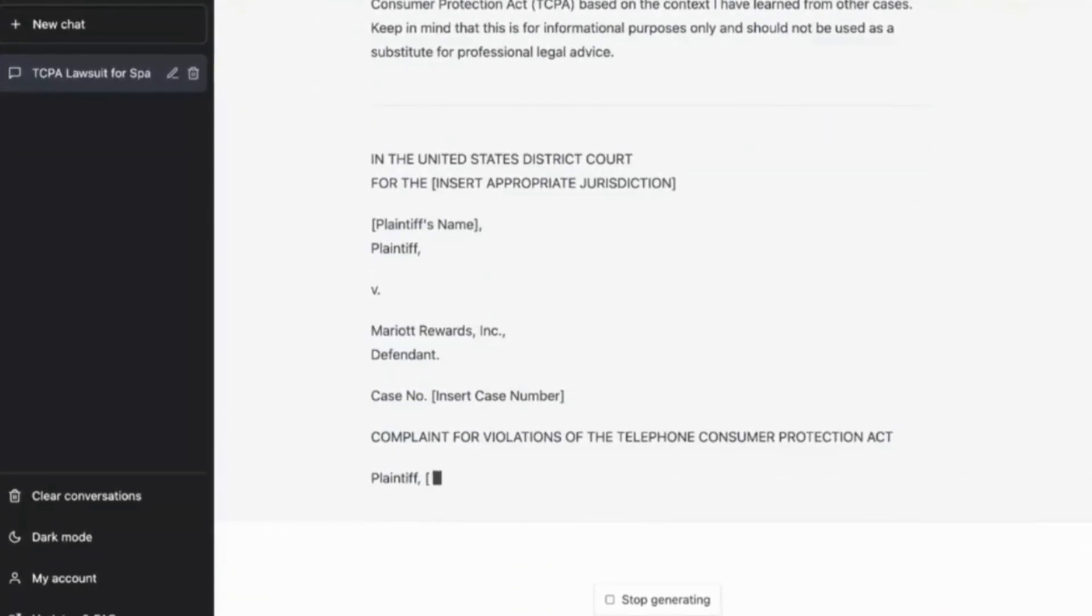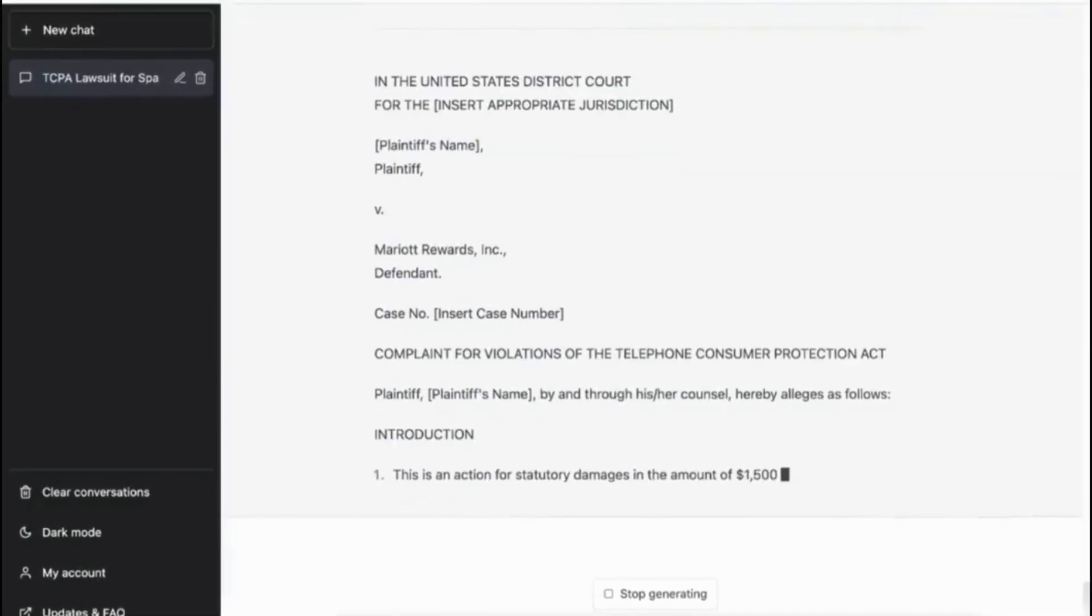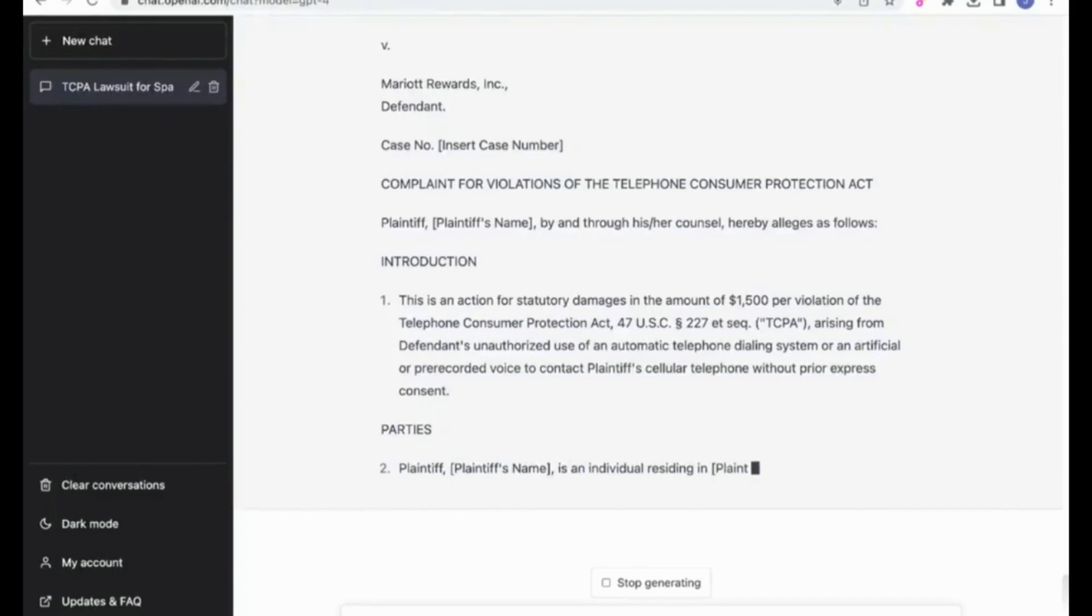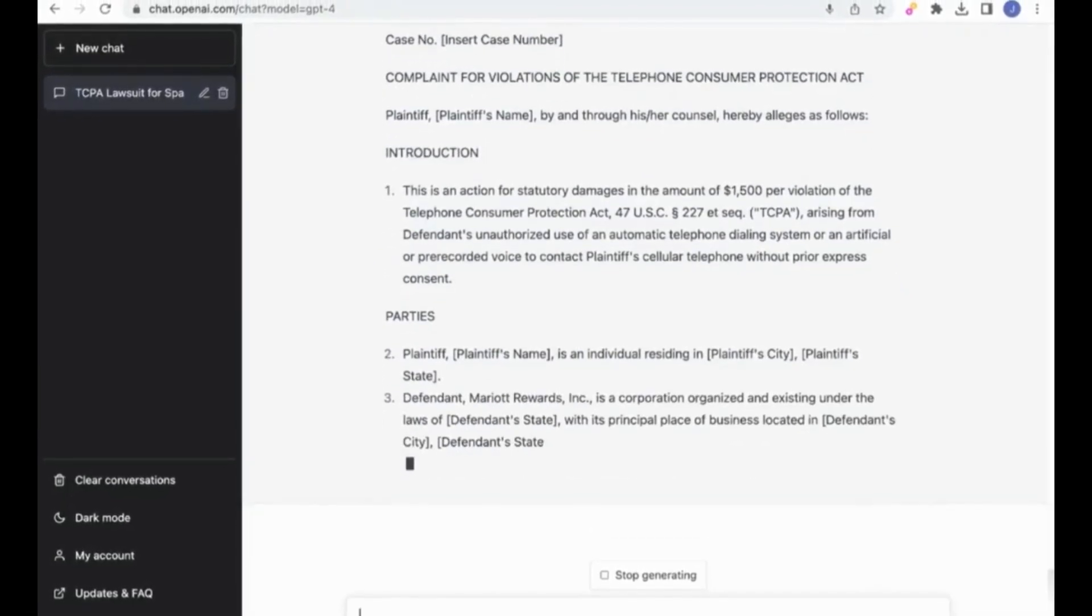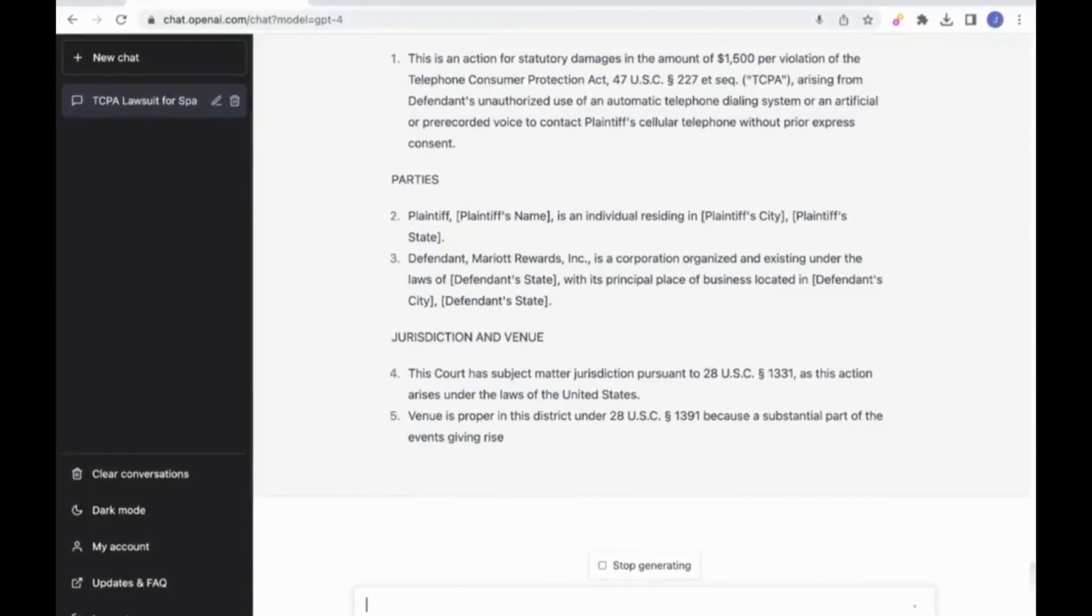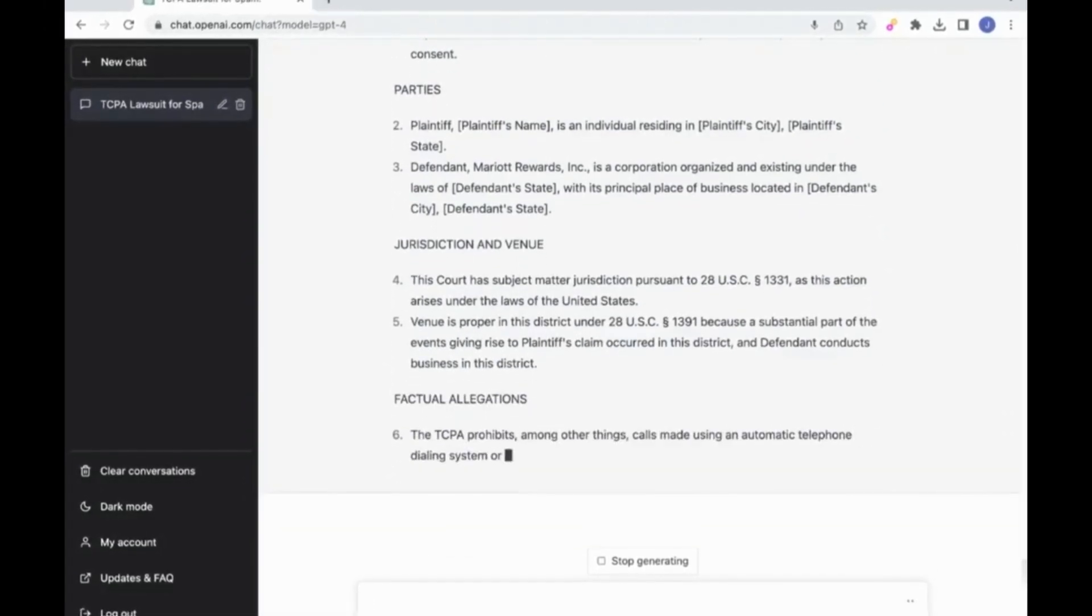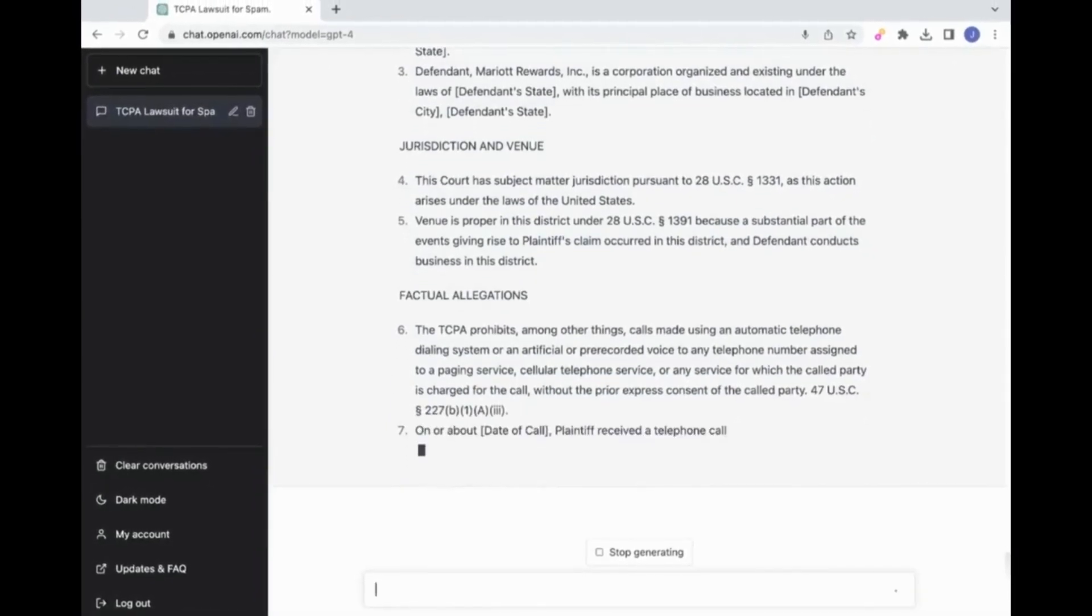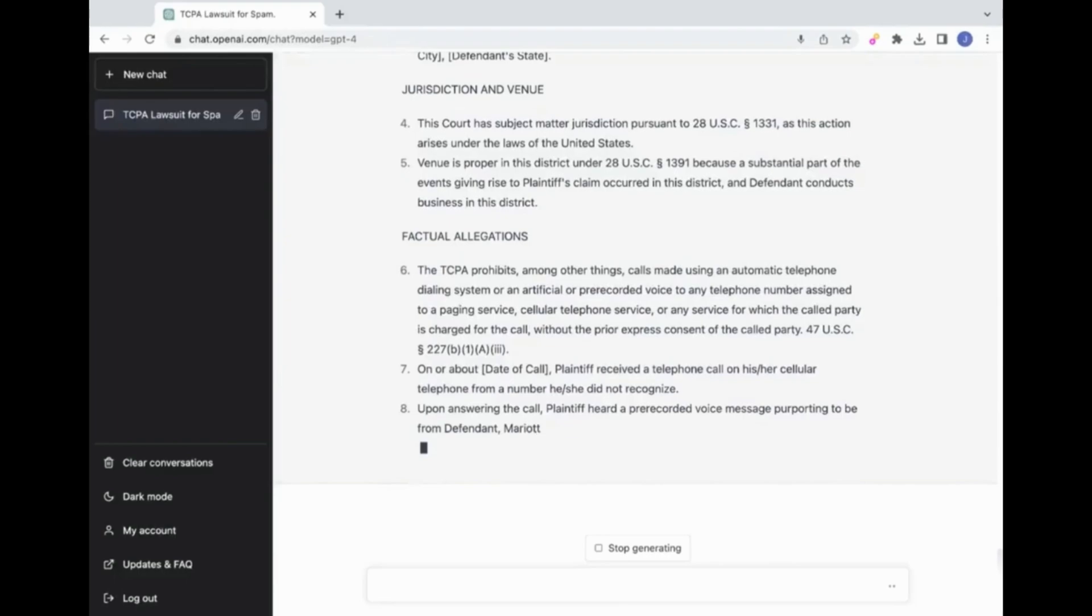GPT 4's capabilities in reasoning and knowledge retention are significantly enhanced compared to its predecessors. An excellent example of this is its ability to generate one-click lawsuits, 1,000 words, to sue robocallers for $1,500. But GPT 4's capabilities don't stop there. It also demonstrates outstanding performance in other domains and tasks.